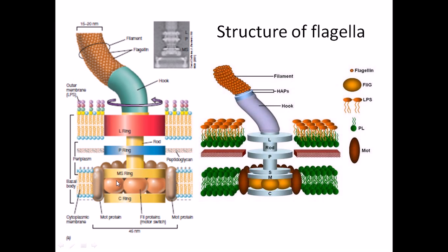At the inner membrane, there is another structure embedded there called the C ring. The inner membrane contains Mot proteins — shown in brown — which are embedded there. The rings are named after the proteins that form them: M, S, and C proteins. The proteins making up the flagellar structure are termed Fli proteins — such as FliM, FliS, FliH, FliP, and FliG — and these different proteins are assembled together to maintain the proper structure of the flagellum. All of this makes up the rotor, which is the rotating unit.